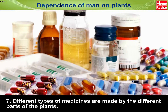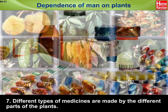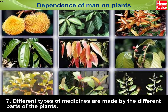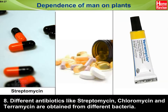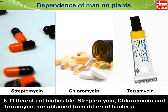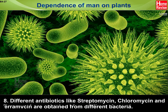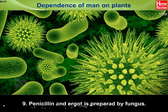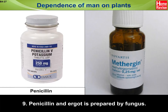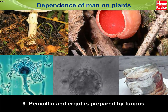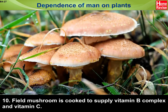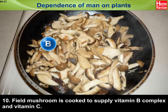Different types of medicines are made from different parts of plants. Different antibiotics like Streptomycin, Chloromycin and Tetramycin are obtained from different bacteria. Penicillin and Ergot are prepared by Fungus. Field Mushroom is cooked to supply Vitamin B Complex and Vitamin C.